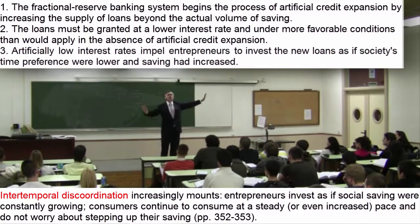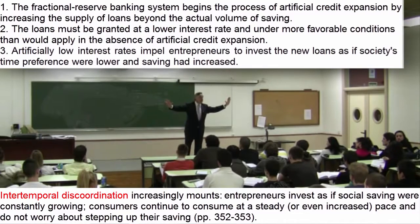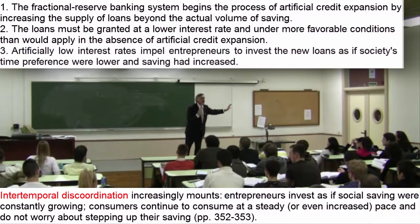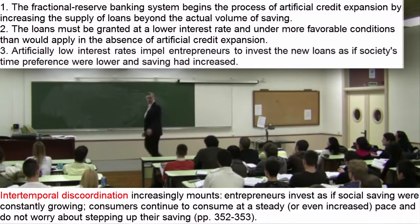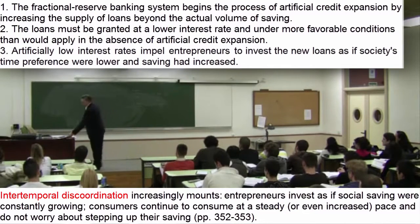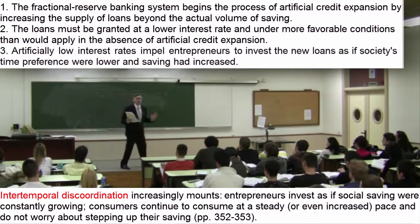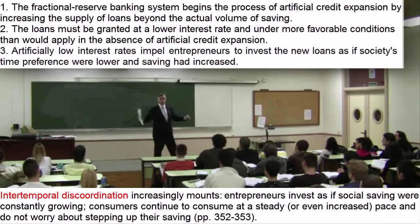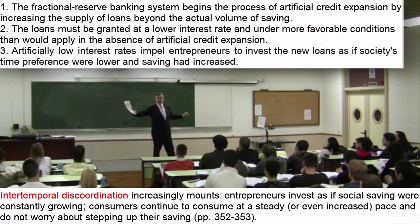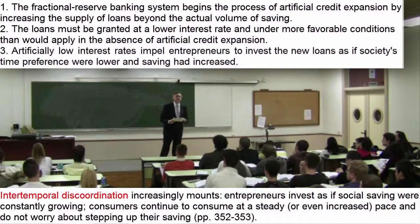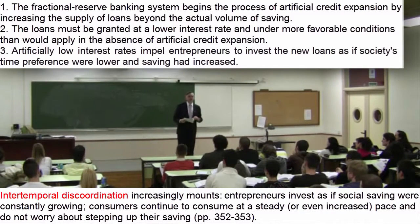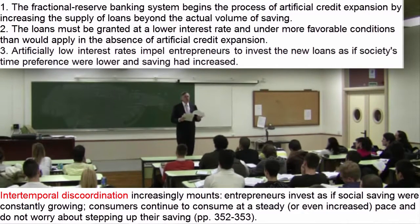In the absence of an increase in saving, how can entrepreneurs possibly step up investment? They can do so because their projects are being temporarily financed by newly created money through a process of credit expansion. That maladjustment — that widespread discoordination between investors, entrepreneurs, and savers who do not wish to save and continue to consume at the same rate — can last for months, and can even stretch on for two, three, or four years. Moreover, for a period of time, it seems as if the productive structure could get longer and more capital-intensive without any need of saving.